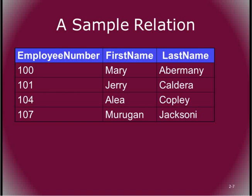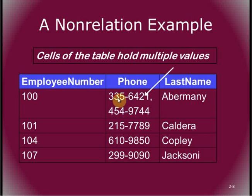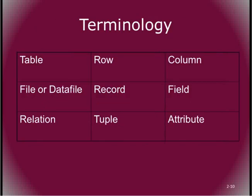Here's a non-relation example. Records are horizontal rows; fields are vertical columns. In this record, we have two phone numbers in one cell — that breaks the rules. Another example: the first and fourth records are identical — duplicate records make it no longer a proper relation. So these are the characteristics that distinguish a true relational table.